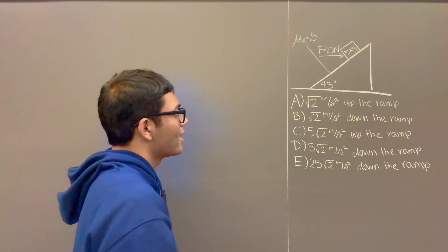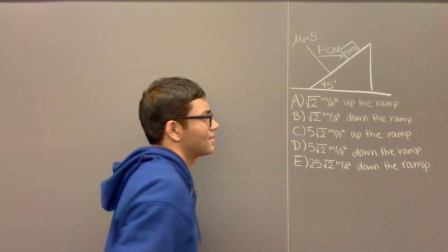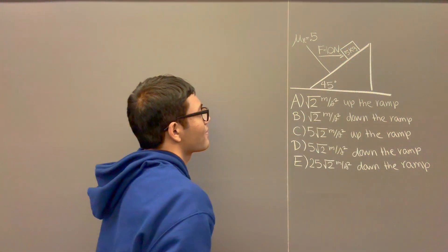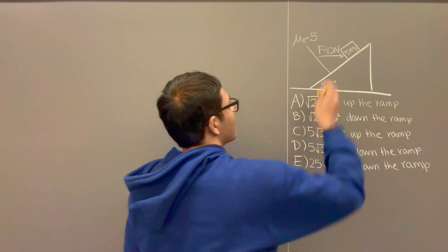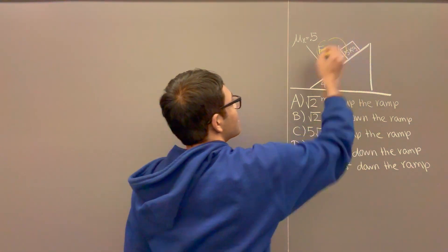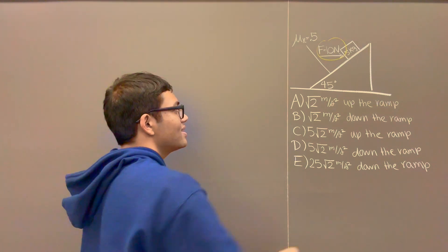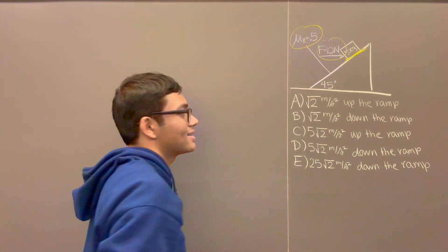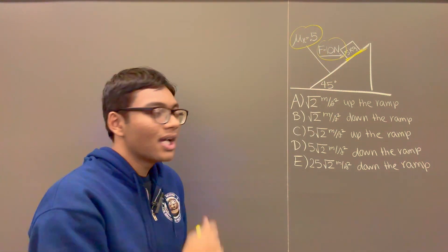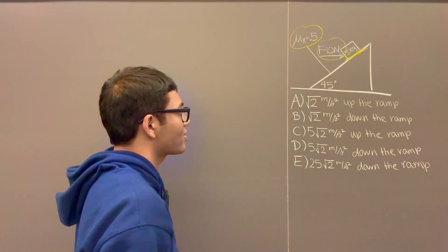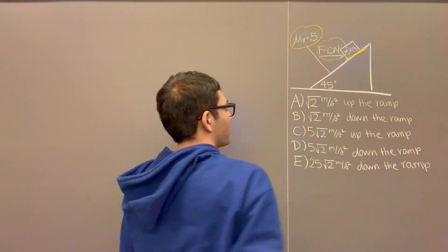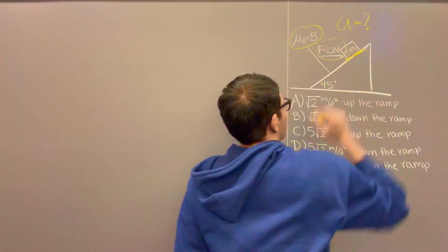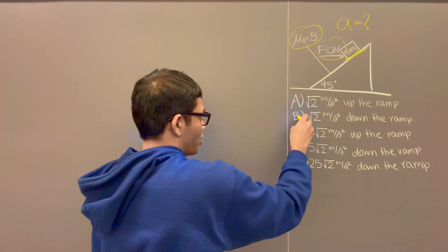So here's our problem. We have a box of 5 kilograms on an inclined plane of 45 degrees. And we exert a force — an applied force of 10 newtons on the box. Now there is friction between the box and the ramp. That friction is μk equal to 0.5, our coefficient of kinetic friction. Now the question is: what is the acceleration of the block down or up the ramp?